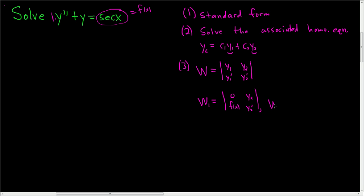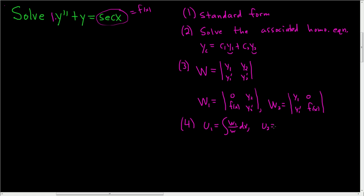Then compute W2: keep the first column as y1, y1 prime, and replace the second column with 0 and f(x). So in W1 you put the 0 and f(x) in the first column; in W2 you put it in the second column. Step 4: compute u1 as the integral of W1 over W dx, and u2 as the integral of W2 over W dx.